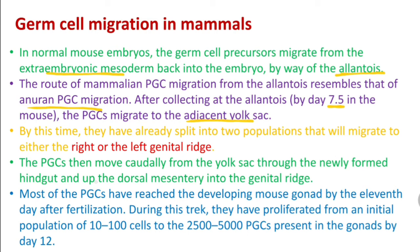From the yolk sac, PGCs move caudally through the newly formed hindgut, up the dorsal mesentery, and into the genital ridges — similar to anuran migration. Most PGCs have reached the developing mouse gonad by day 11 after fertilization.